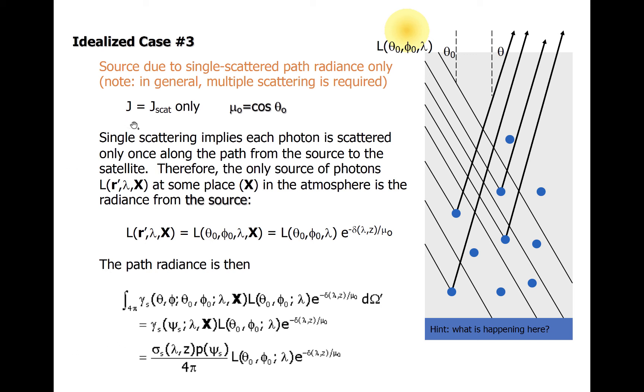In this case, J sub Th is 0, there is no thermal emission, and we will also assume that no radiation is emitted by the surface.